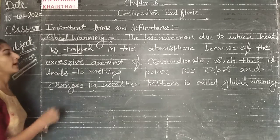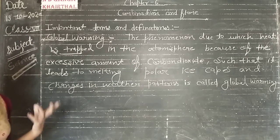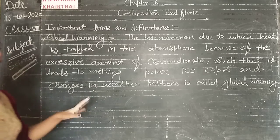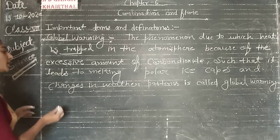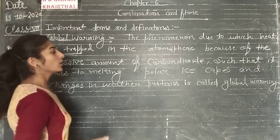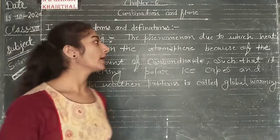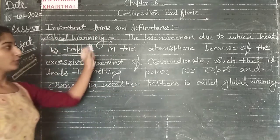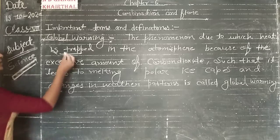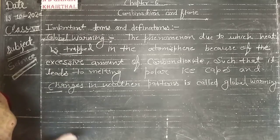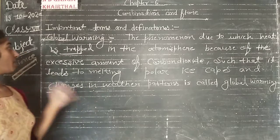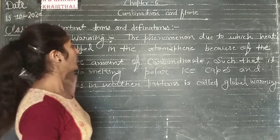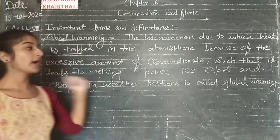Because of the excessive amount of carbon dioxide, it can change the weather pattern. It is called global warming because heat is trapped due to the excessive amount of carbon dioxide.